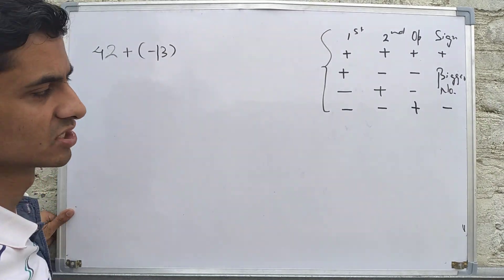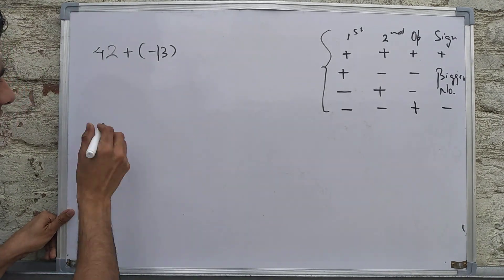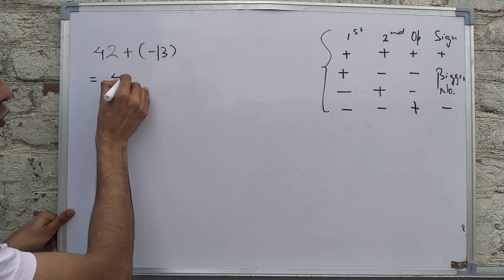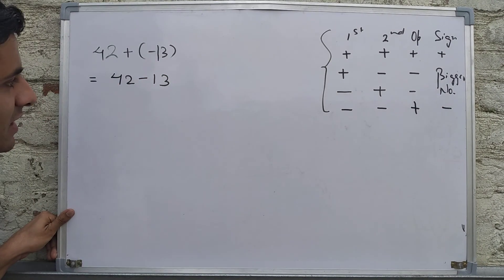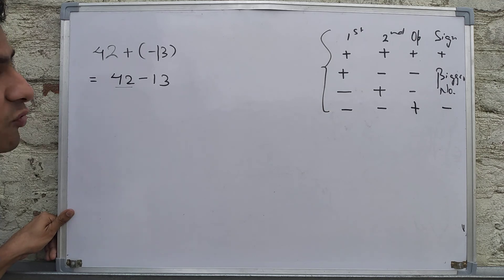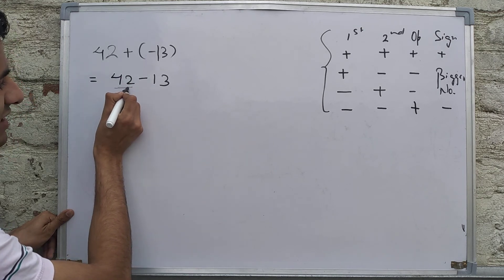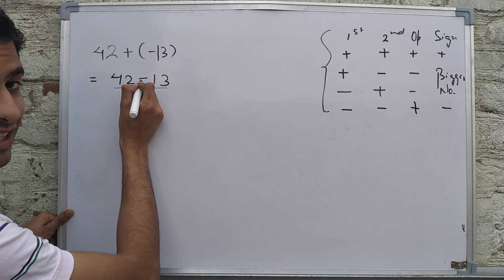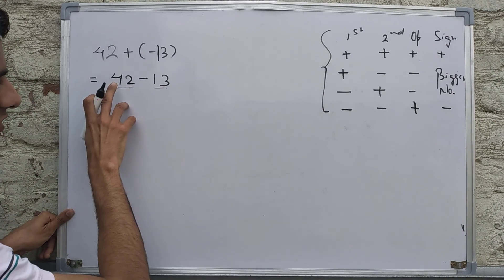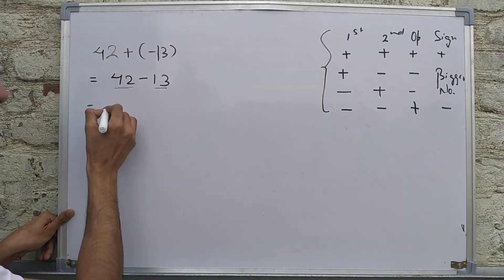From this table, you can do all operations after opening the brackets. For example: 42 + (-13). To check the sign of a number, look at what is in front of it. In front of 42 there is nothing, so it is positive. In front of 13 it is negative. So one number is positive, one is negative — we will do subtraction.